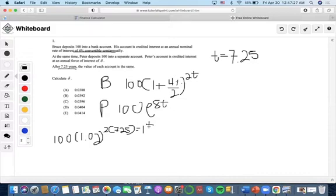Then we get the base of 1.02 to the 14.5, which is about 1.332608 multiplied by 100. And we get that this whole thing in total is equal to 133.2608.